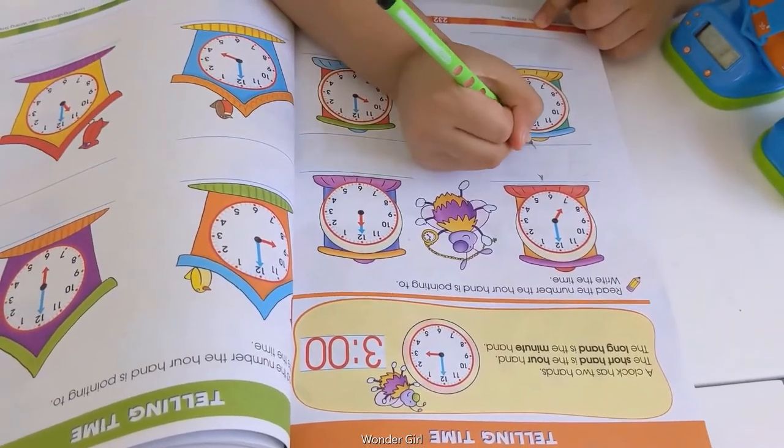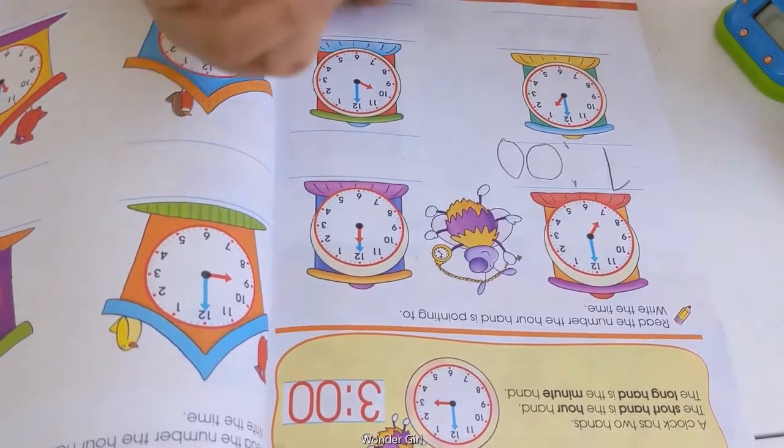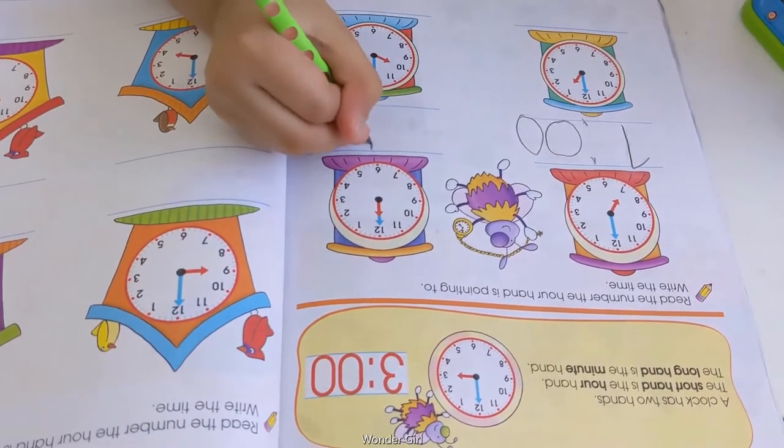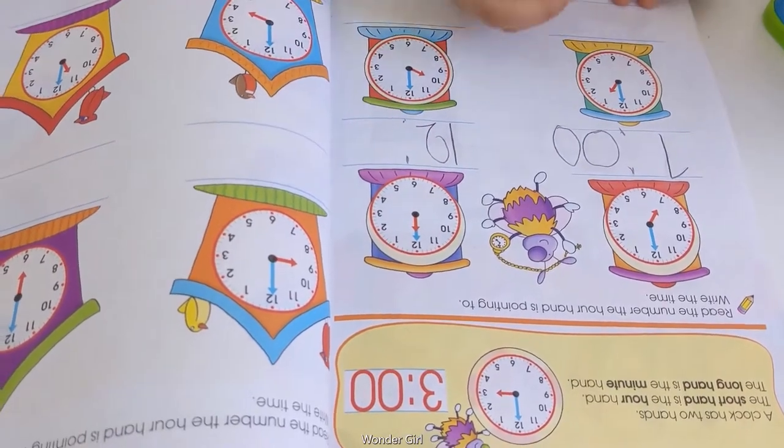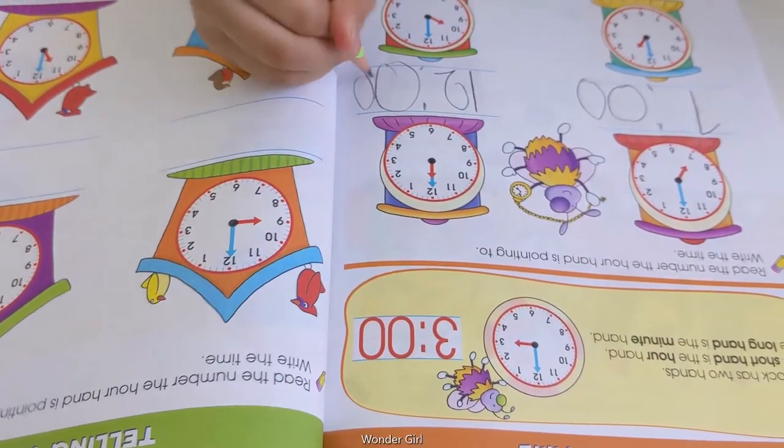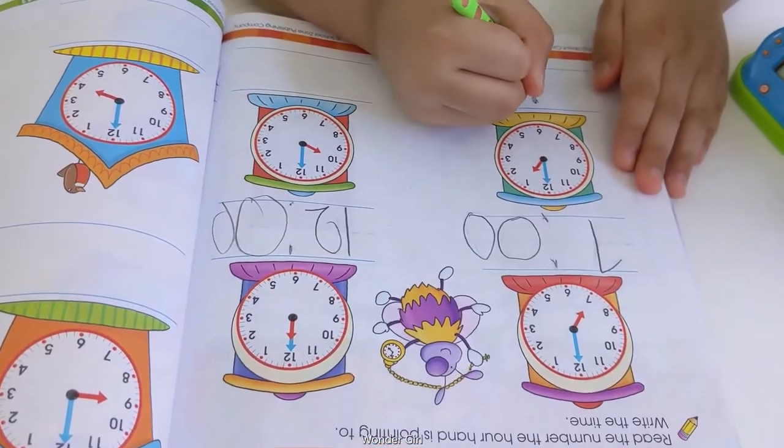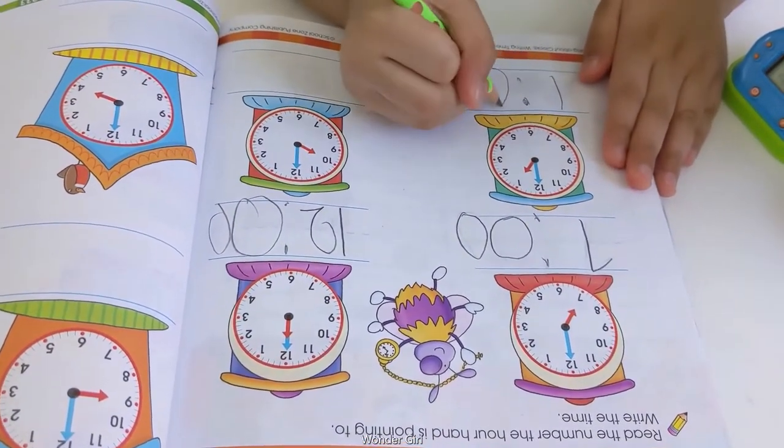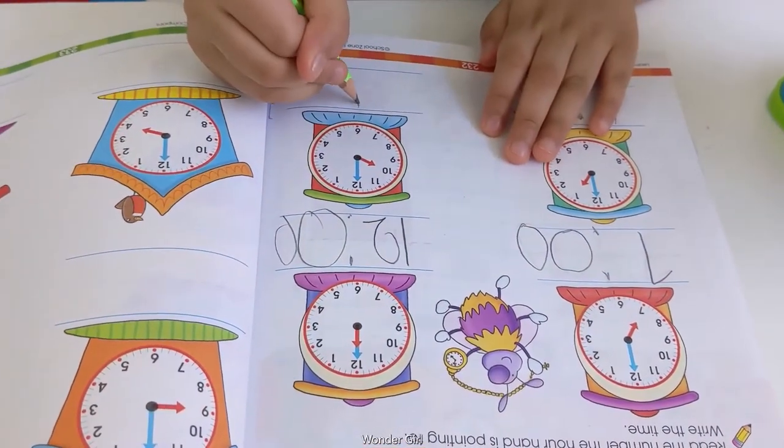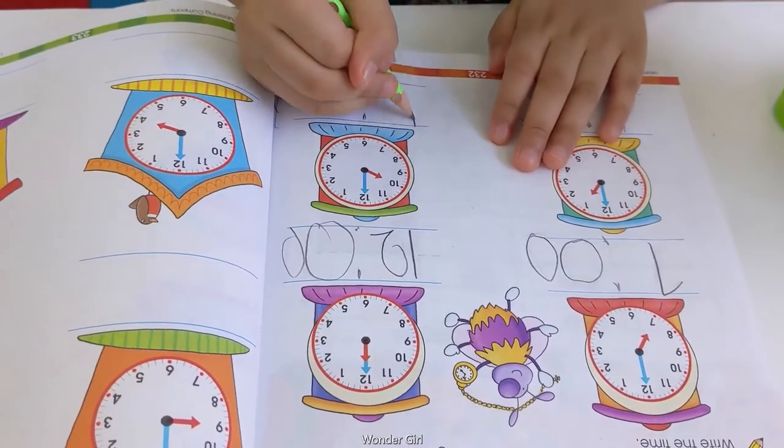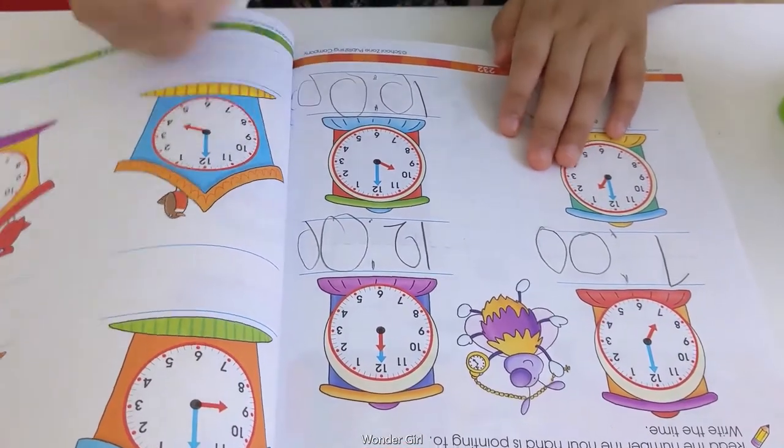7 o'clock. This is 12 o'clock with two dots. And this is 12. This is 1 o'clock. 9 o'clock. This is 9 o'clock.